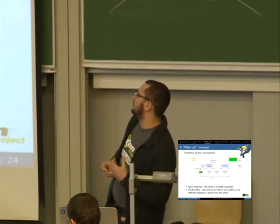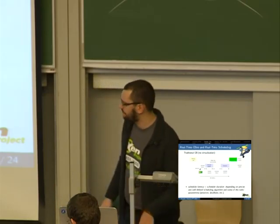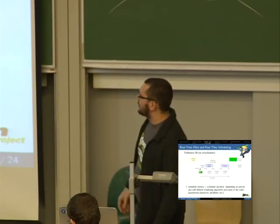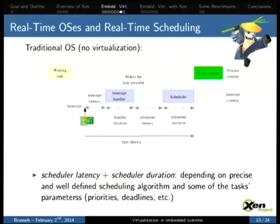This is a classical interrupt delivery and latency measurement in an operating system. The operating system implementation is responsible for the scheduling latency and scheduler duration — meaning it depends on the OS implementation and configuration how frequently the scheduler will run and have a chance to pick up a task that just became ready, and how complex that operation is and thus how long it takes.